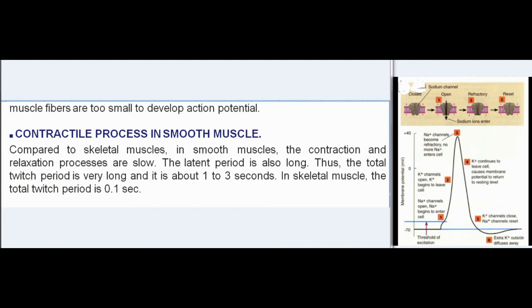Contractile process in smooth muscle: compared to skeletal muscles, the contraction and relaxation processes in smooth muscles are slow. The latent period is also long. Thus the total twitch period is very long — about 1 to 3 seconds. In skeletal muscle, the total twitch period is 0.1 second.